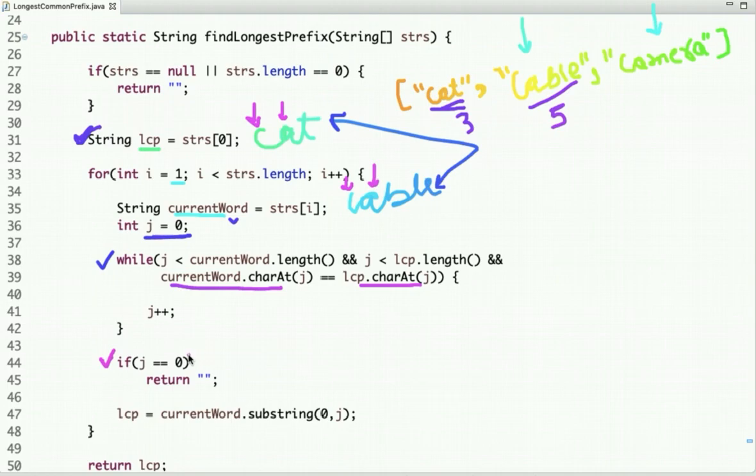no common prefix is found. So if the value of j is 0, then no common prefix is found, return an empty string. Else we extract the substring of the length j. So in this case the substring is 'ca', so we have one common prefix.